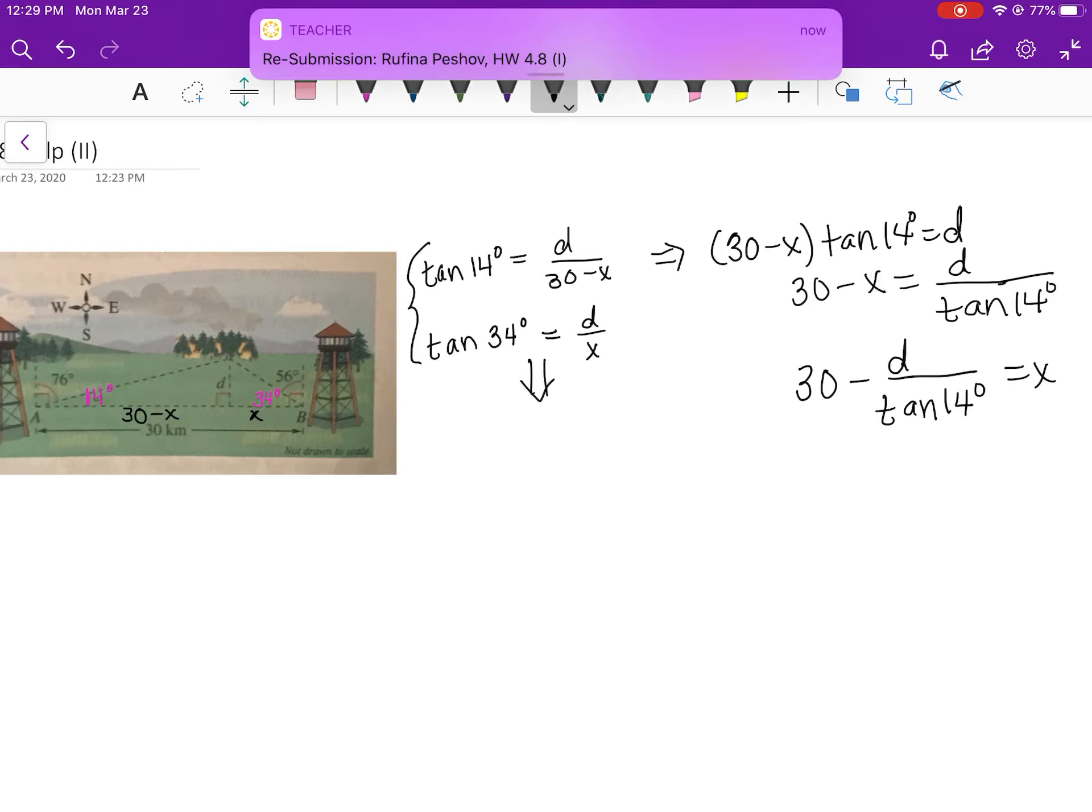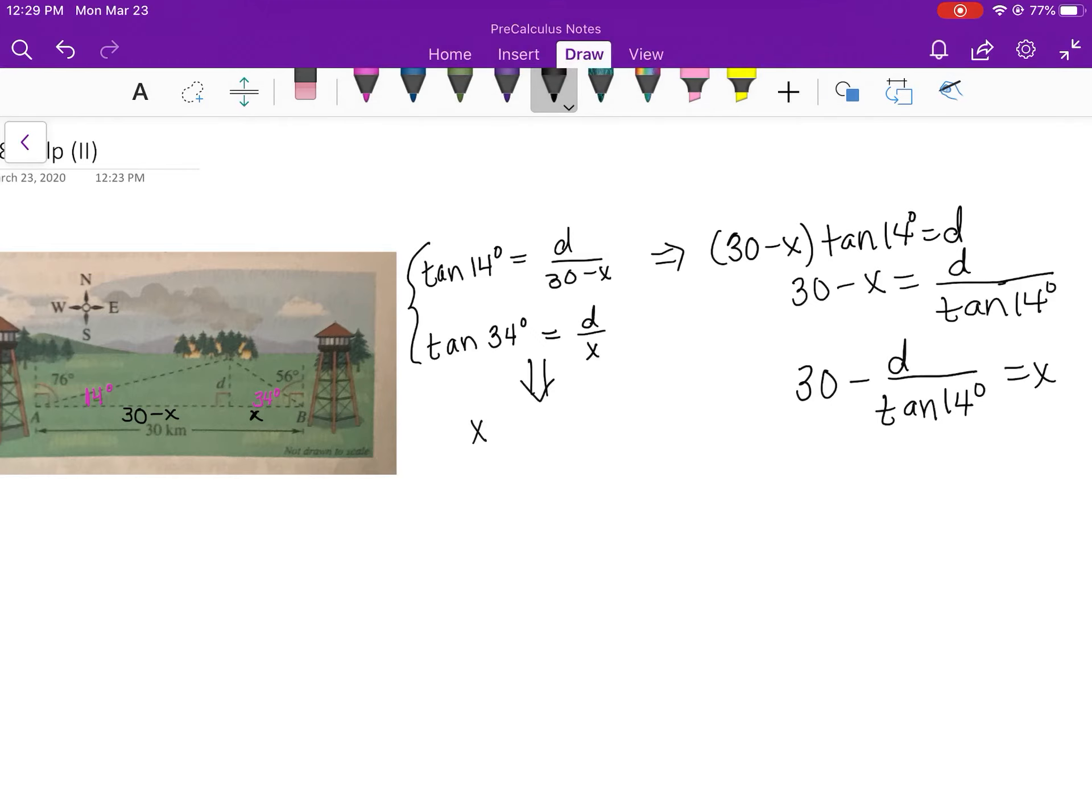All right, to take this equation, I'm going to solve it for X. I'm going to multiply both sides by X. Divide by the tangent of 34.